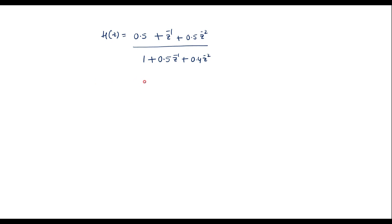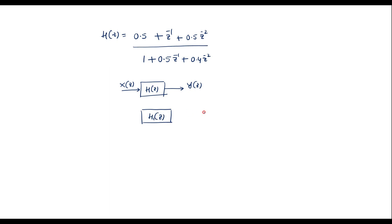The transfer function H(Z) can be divided into two subsystems H1(Z) and H2(Z) connected in cascade. Let X(Z) be the input and Y(Z) be the output. X(Z) is the input for H1(Z), W(Z) is the output of H1(Z), and W(Z) acts as the input for H2(Z) with Y(Z) as the output.